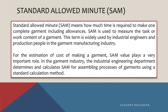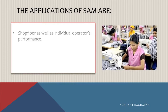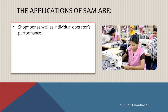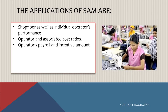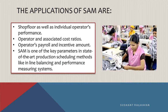The industrial engineering department determines and calculates SAM for assembling processes of garments using a standard calculation method. The applications of SAM include shop floor as well as individual operator performance, operator and associated cost ratios, operator payroll and incentive amount. SAM is one of the key parameters in state-of-the-art production scheduling methods like inline balancing and performance measuring systems.